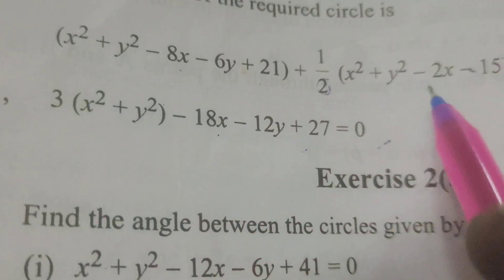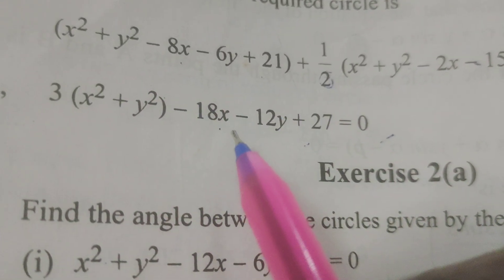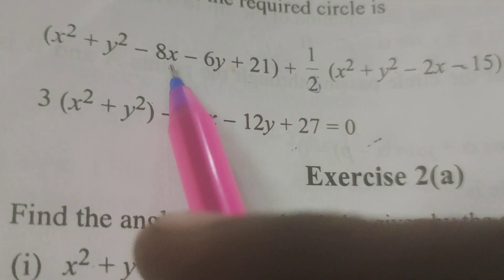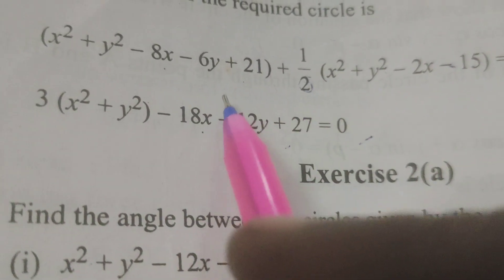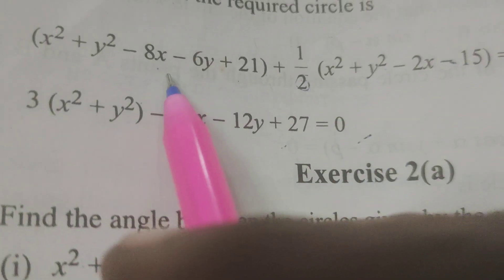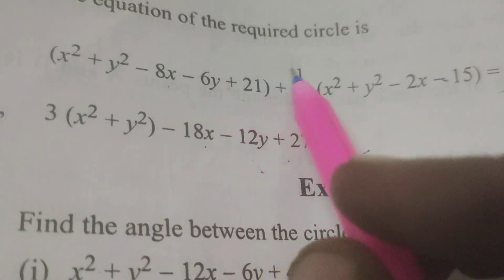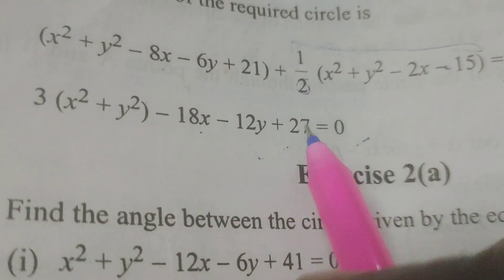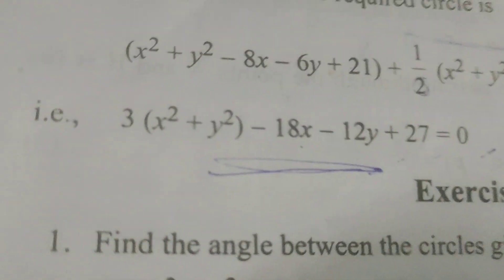Combining all like terms: 3x² + 3y² - 18x - 12y + 27 = 0, where -16x - 2x gives -18x, and we have -12y for the y terms. This is the required equation.